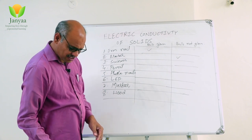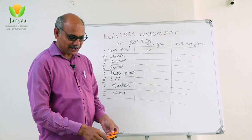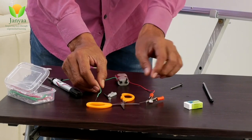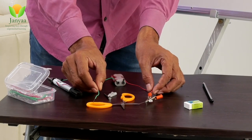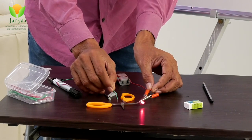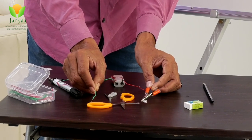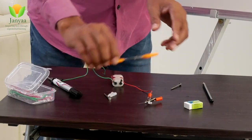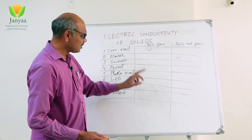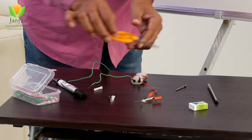Next, let us check scissors. Scissors have a plastic part and a metal part. When we use the metal terminal, the bulb glows. When we use the plastic part, the bulb does not glow. So when you use only the metal piece the bulb glows, but when metal is combined with non-metal — that is, the plastic — the bulb does not glow.